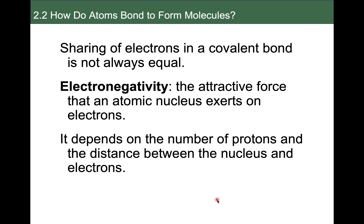Different atoms can have different electronegativity — really just a fancy way of saying the attractive force that a particular atom has on electrons. Electrons are negatively charged, so what attracts them is a positive charge: protons. The more protons a particular atom has in its atomic nucleus, the more positive charge in that nucleus, and the bigger the attractive force that atom is going to have on electrons.